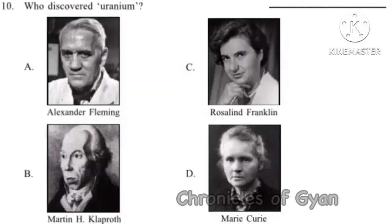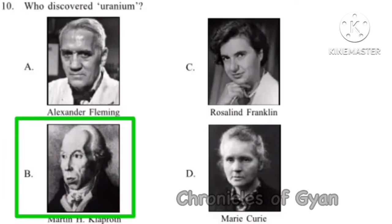Question 10: Who discovered uranium? The correct option is Option B, Martin Heinrich Klaproth. He was a German chemist who discovered uranium in 1789.